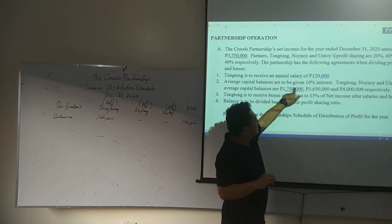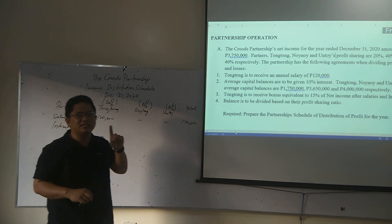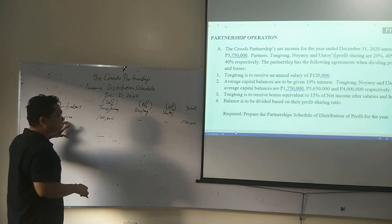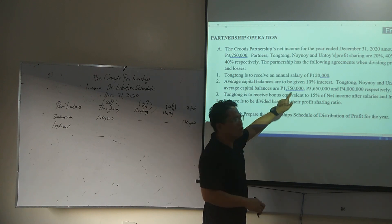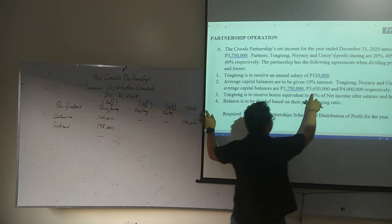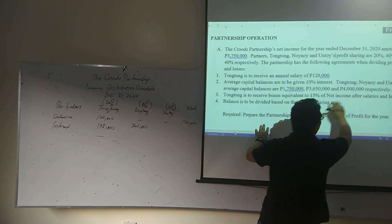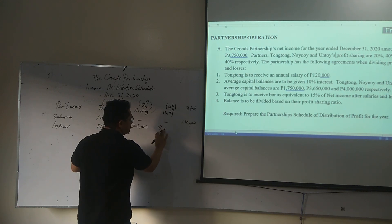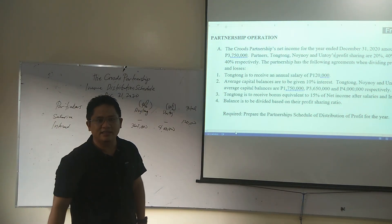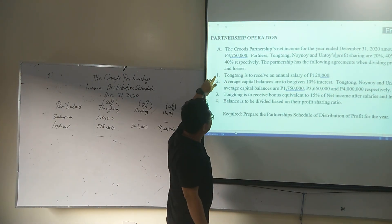Next, average capital balances are to be given 10% interest. We will be providing interest — remember, this interest is not a partnership expense; it is only an income distribution device. Interest is 10% of their capital balances: for Tongtong, 175,000; for Winoy, 165,000; for Ontoy, 400,000. The interest total is 940,000. We've now given the annual salary and interest on average capital.